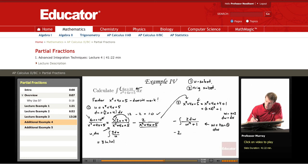So minus 2 arctangent of w, which in turn converts back to minus 2 arctangent of x plus 2.